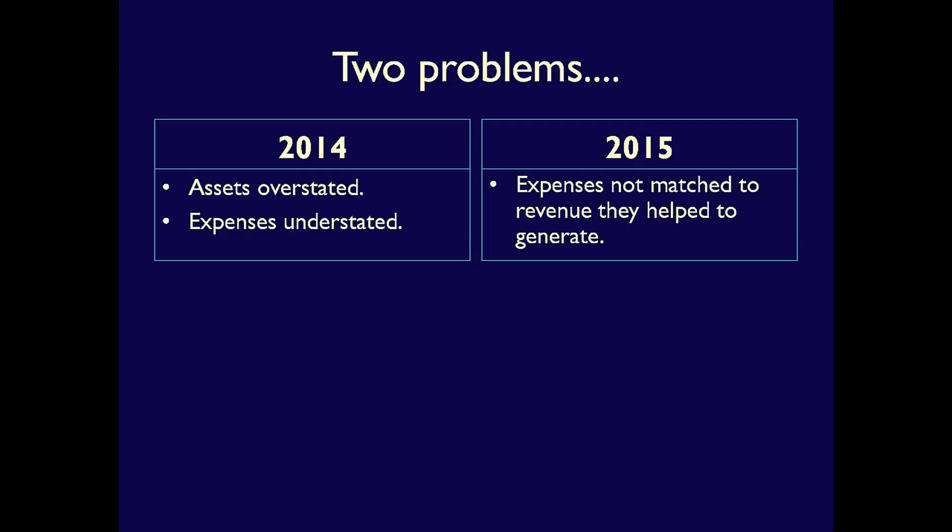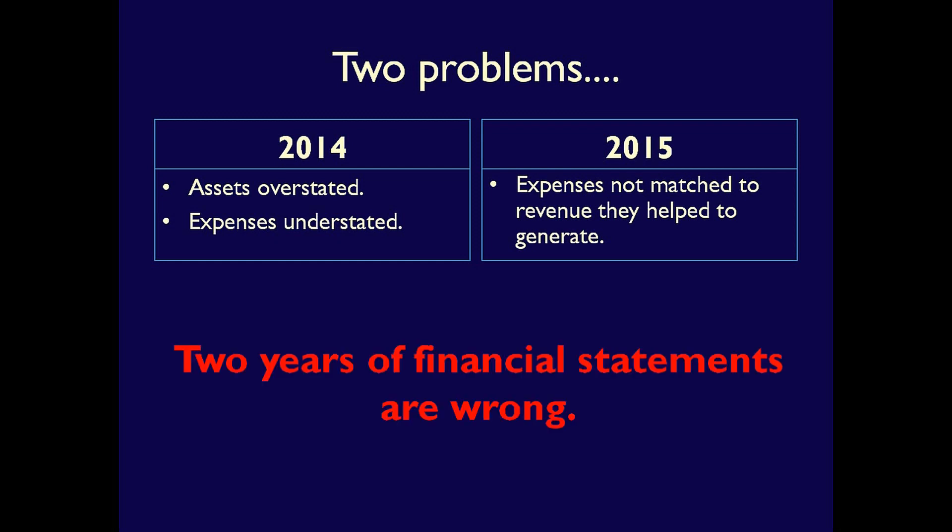By keeping accounts receivable in 2014 at $360,000, we're overstating our assets — our assets are greater than their expected future economic benefit. So in 2014, we have an overstatement of our assets because they're not equal to their future economic benefit, and we understated our expenses because we didn't match them to the revenue they helped to generate. In addition, in 2015, we've not matched the expense to the revenue it helped to generate. So our expenses are overstated in 2015 because they're in the wrong time period. By ignoring what might go wrong in the future at the end of 2014, we've made a mess of two years of financial statements.